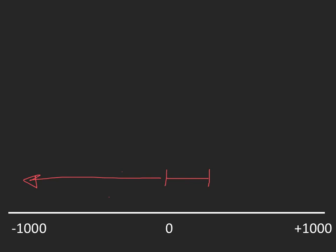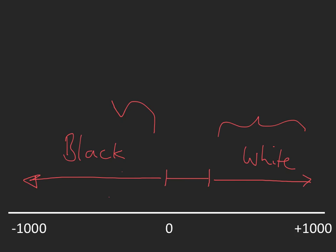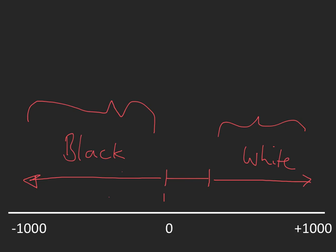When we have a specific window, everything that has a density less than the bottom number of Hounsfield units will be black on the image. Everything greater than the top of the window will be white. All of our diagnostic information is concentrated within that window range.